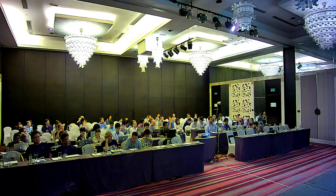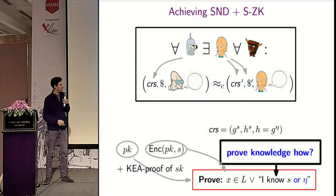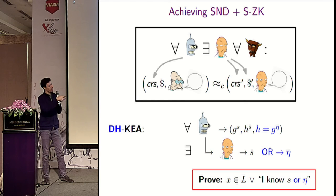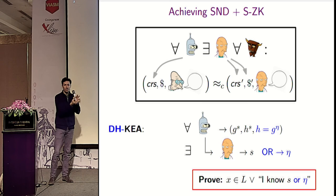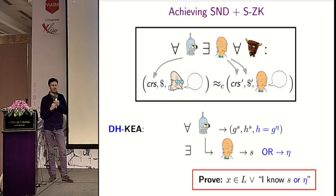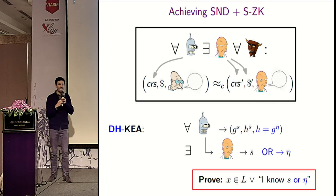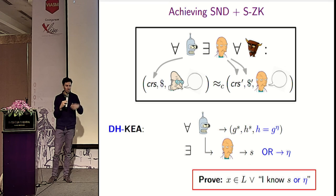Question: you needed to prove that the prover knows the secret key for the public key — the KEA proof? Answer: Basically, S would be the secret key. Since we do not know whether we will extract s or eta, we have two ciphertexts and combine the secret keys to ensure we can extract at least one. It uses linear encryption with two exponents, and by combining all possible combinations across four encryptions, we can show that at least one can be extracted.